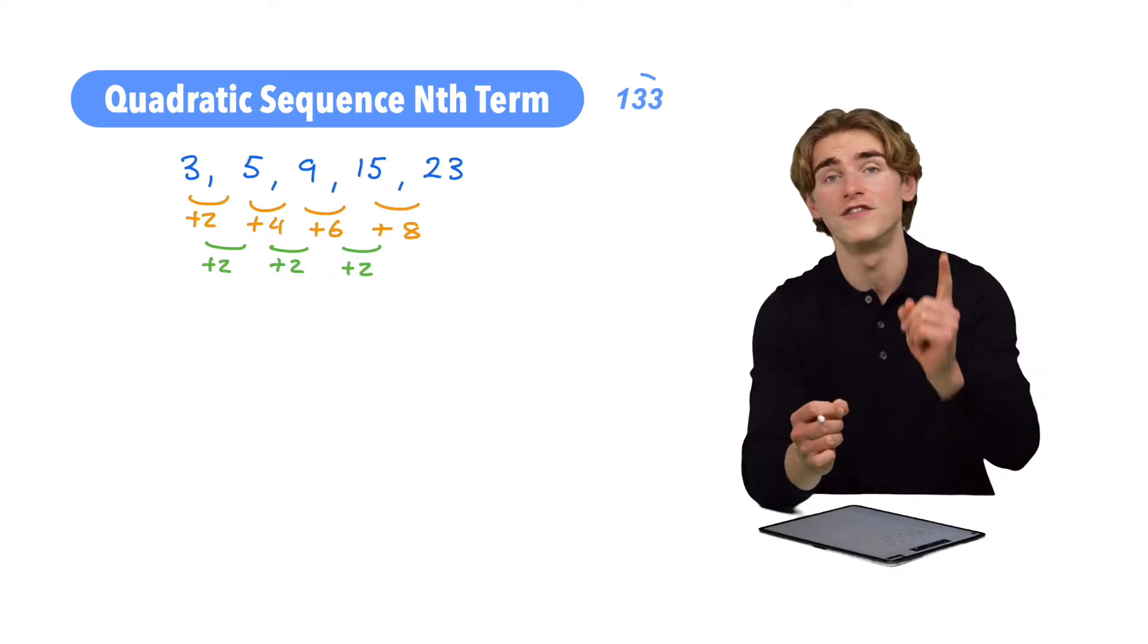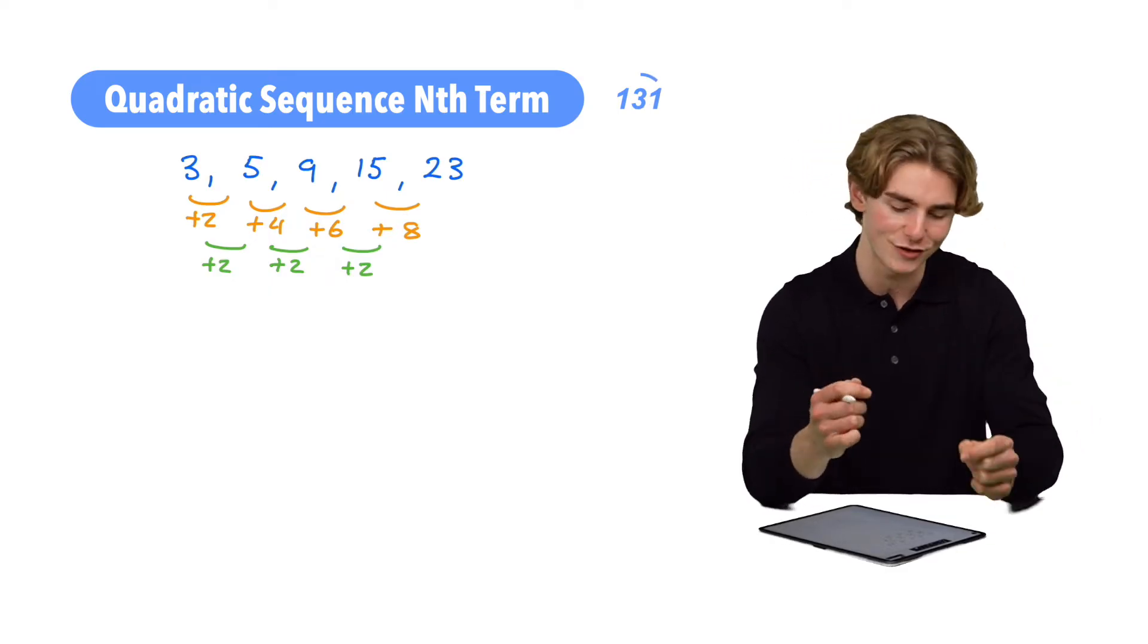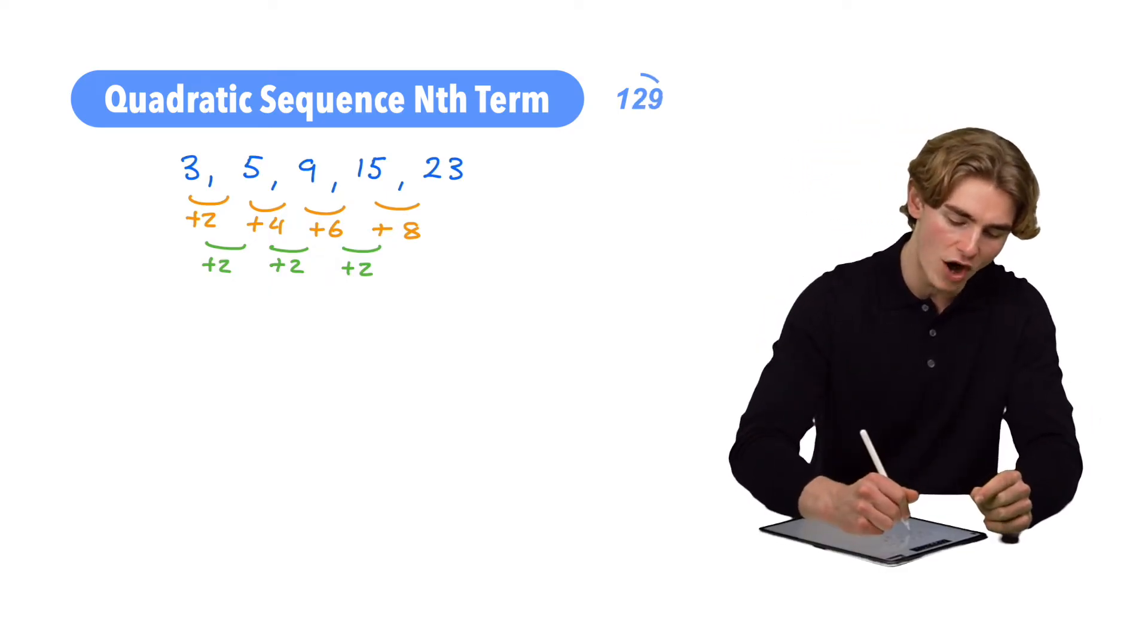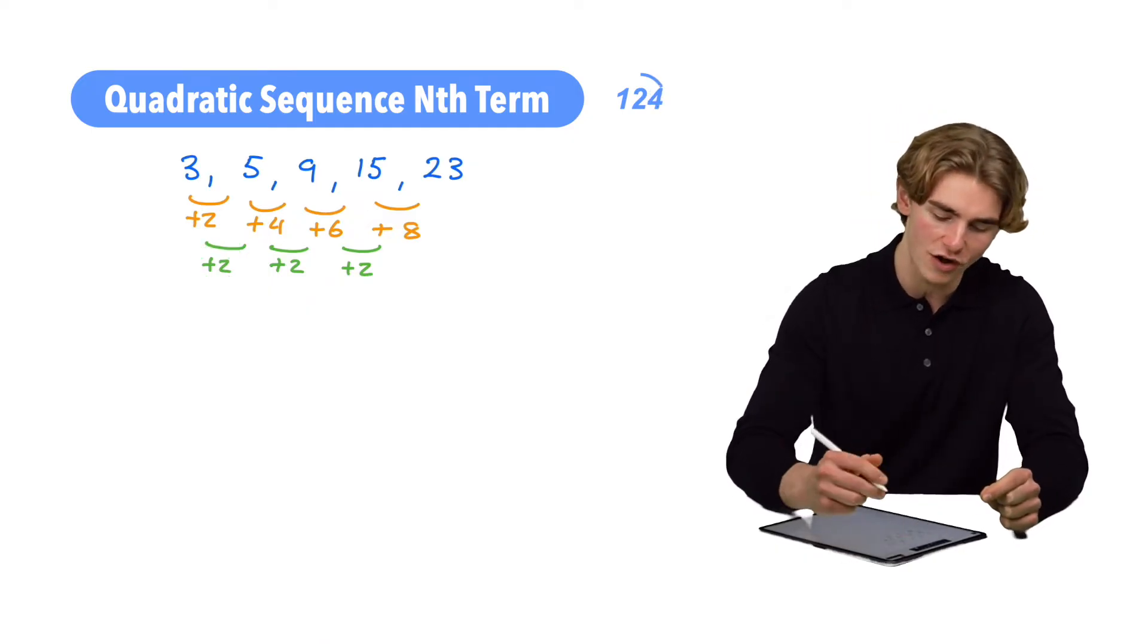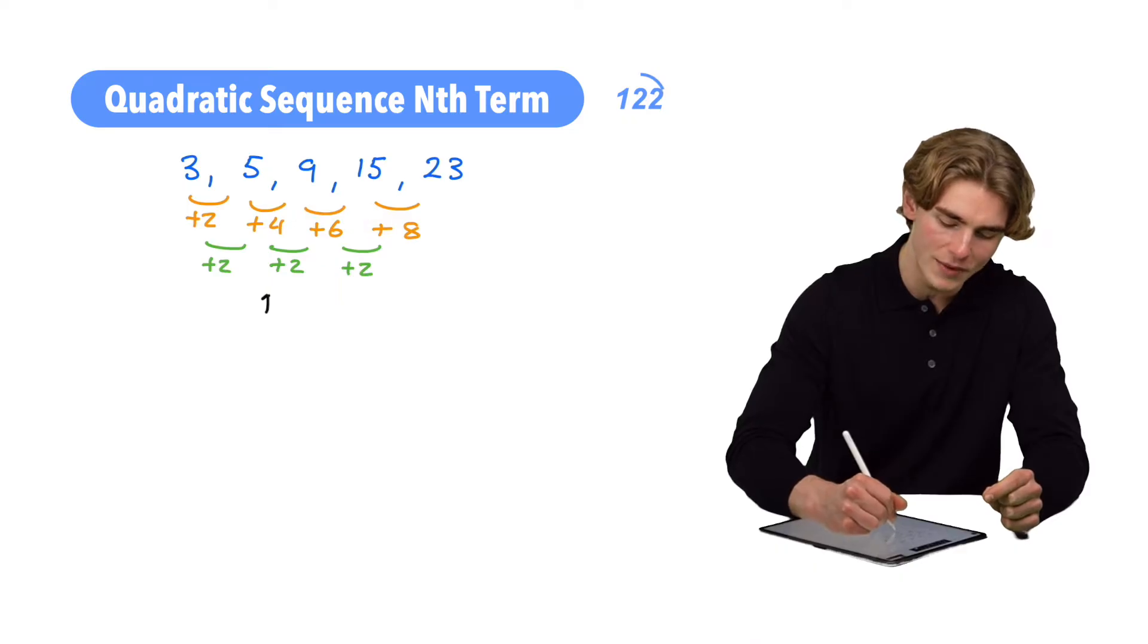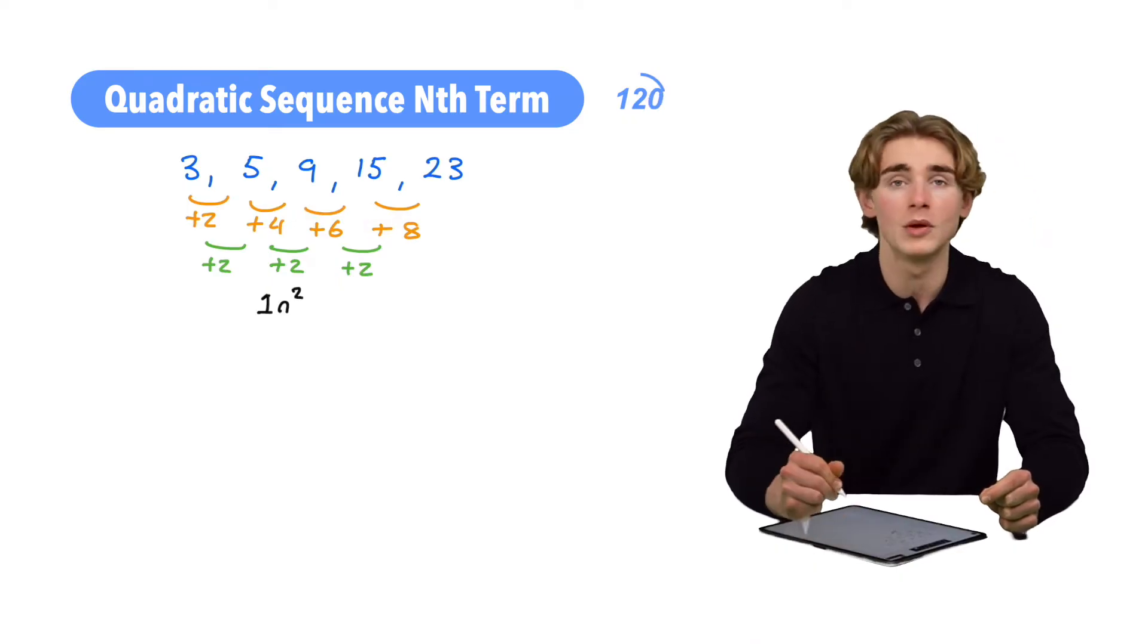Now guys, we have enough information to find the first term of our quadratic nth term. What's it going to be? Well, we're going to halve our second difference. Half of 2 is 1, and that's going to give us the coefficient of n squared. So the first term in our quadratic nth term is going to be 1n squared.